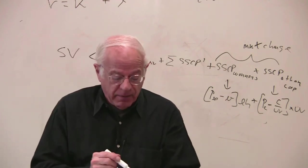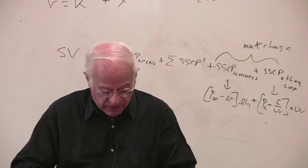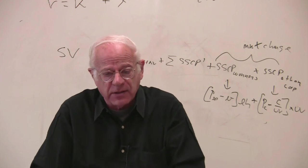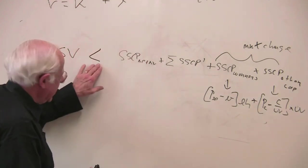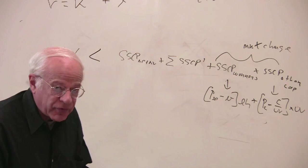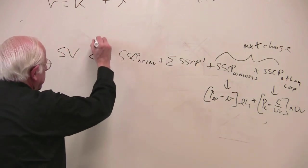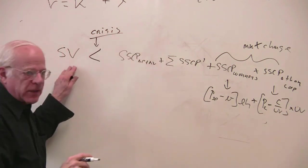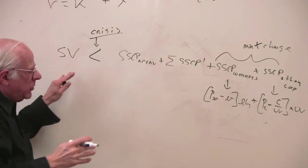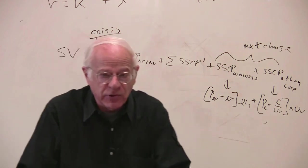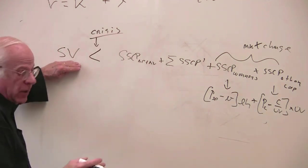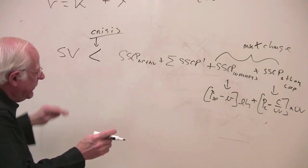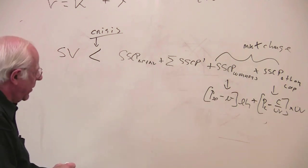Marx then argues — and there's no necessity for this; he himself would have relaxed this, but just to get the point across — he argues that this inequality is a sign of crisis for the capitalists, why? Because the demands on the surplus are greater than the surplus. So there's a variety of possibilities: number one, there could be pressure on the workers to increase their surplus. As a result of this, the one he focuses on in volume one is the following...